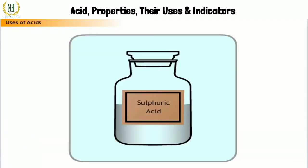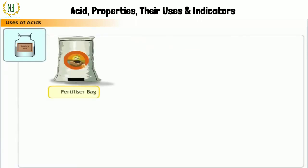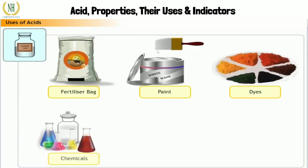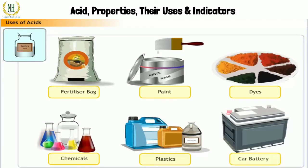Acids have various uses. Sulfuric acid is used in the manufacture of fertilizers, paints, dyes, chemicals, plastics, and synthetic fibers. It is also used in car batteries.